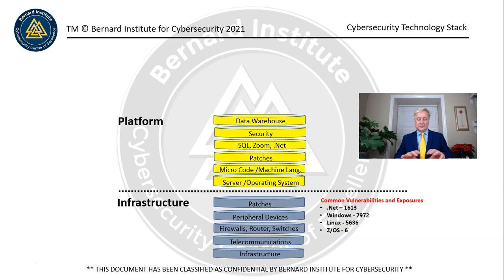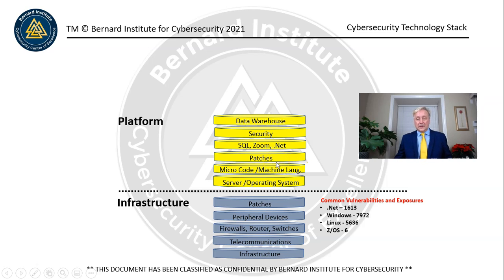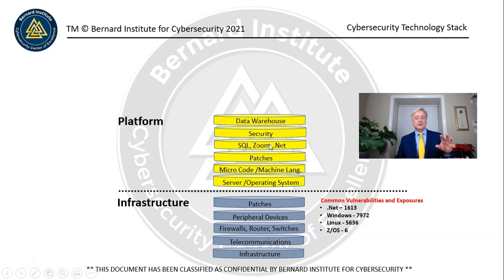Above the infrastructure layer, we have platforms — this is the next layer. Infrastructure provides the bed that everything sits on. At the platform level, we have servers with operating systems, microcode and machine languages being used — EBCDIC, ASCII, or machine language, zeros and ones basically. These require micro-level patching. And then you have utility programs that sit on top of the operating system that allow you to perform other types of functions.